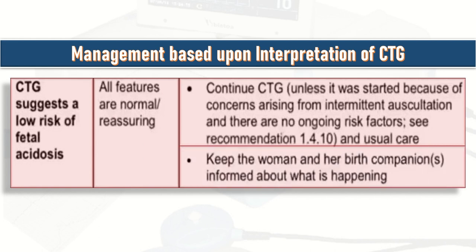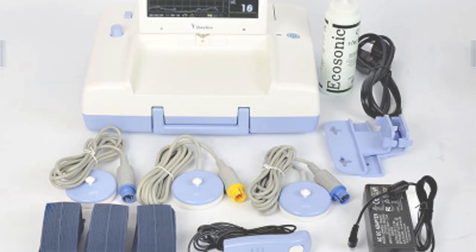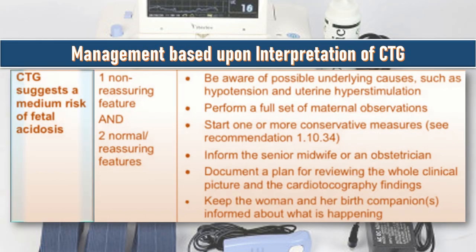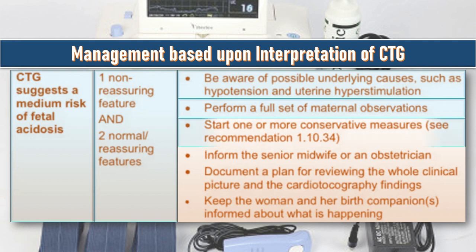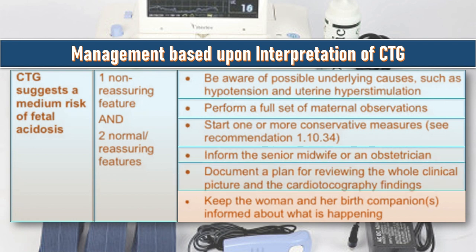When CTG suggests medium risk of fetal acidosis — one non-reassuring feature and two normal or reassuring features — be aware of possible underlying causes such as hypertension and uterine hyperstimulation. Perform a full set of maternal observations, start one or more conservative measures, and inform the senior midwife or an obstetrician. Document a plan for reviewing the whole clinical picture and CTG findings, and keep the woman and her birth companions informed.